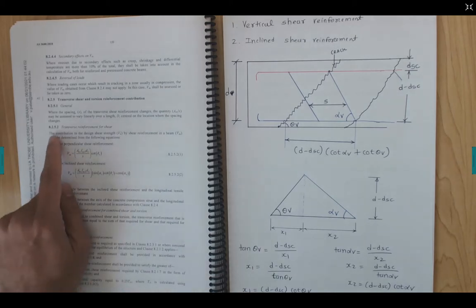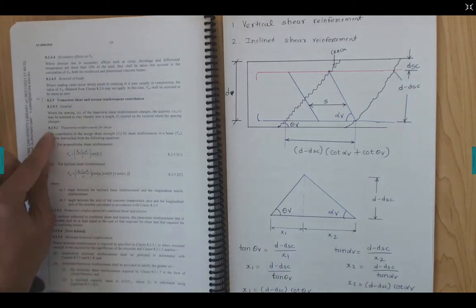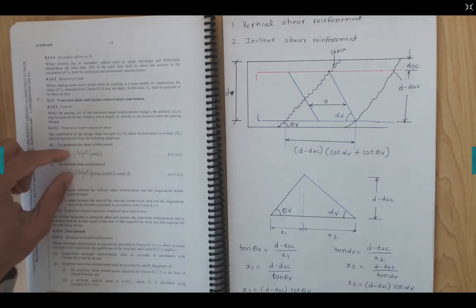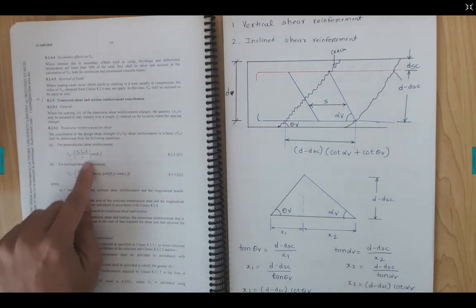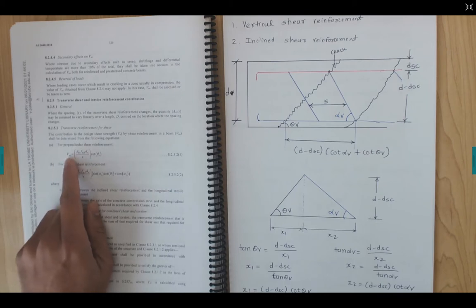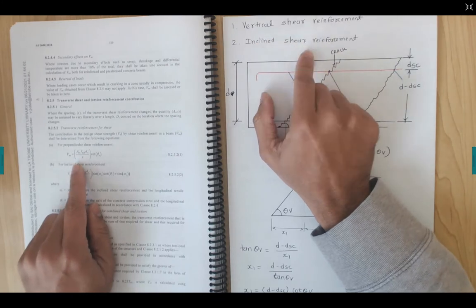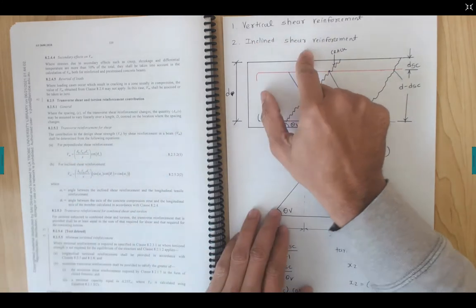This video explains the proof of the equations given in clause 8.2.5.2. This equation is used to calculate the shear capacity of the shear reinforcement. We have both vertical shear reinforcement and inclined shear reinforcement.